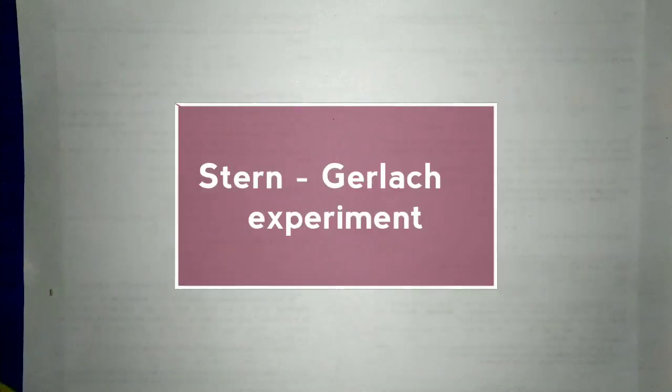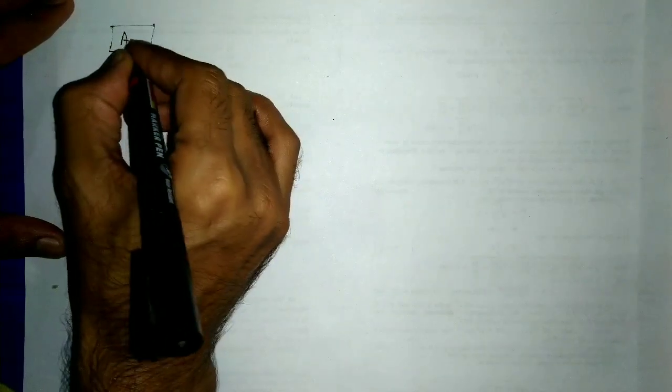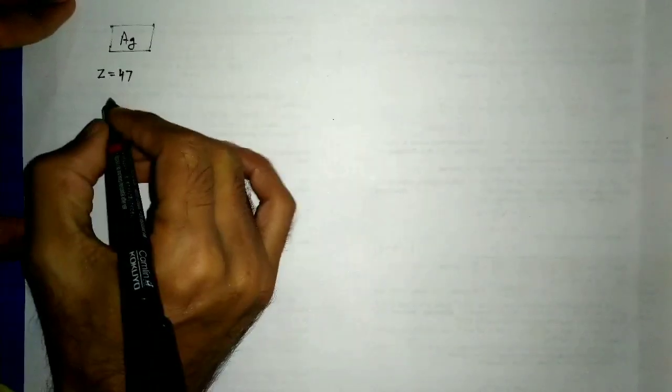Welcome to quantum physics. We discuss a question based on the Stern-Gerlach experiment. Consider an oven O1 which emits silver atoms having atomic number Z = 47, with the last electron configuration 5s1.